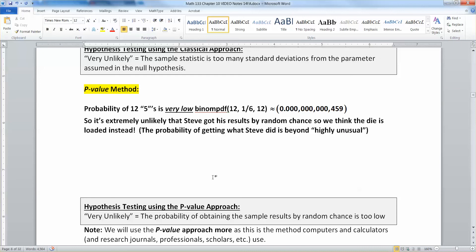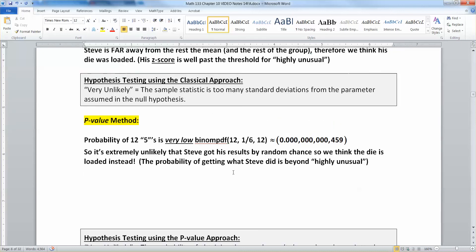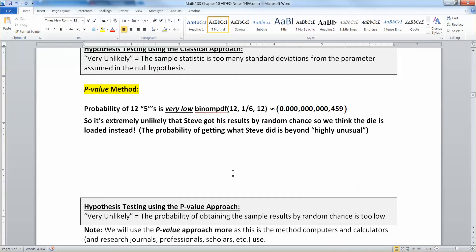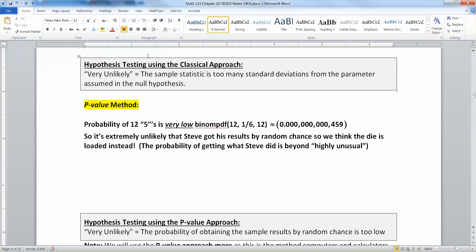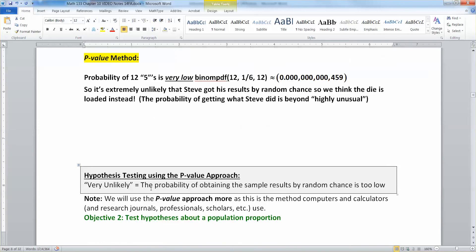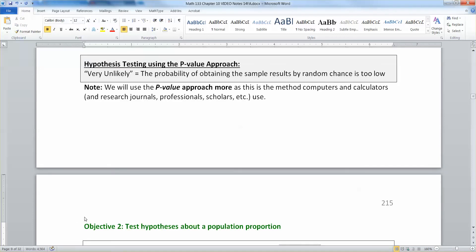In other words, the probability of getting what Steve got is way beyond highly unusual, highly unlikely. So what does highly unlikely mean for these two methods? For the classical approach, it means that you're too many standard deviations from the parameter, like I said before. But for the p-value approach, it means the probability of obtaining the sample results by random chance, just by it happening by accident, is too low. If it's very low, then you will reject the null hypothesis.